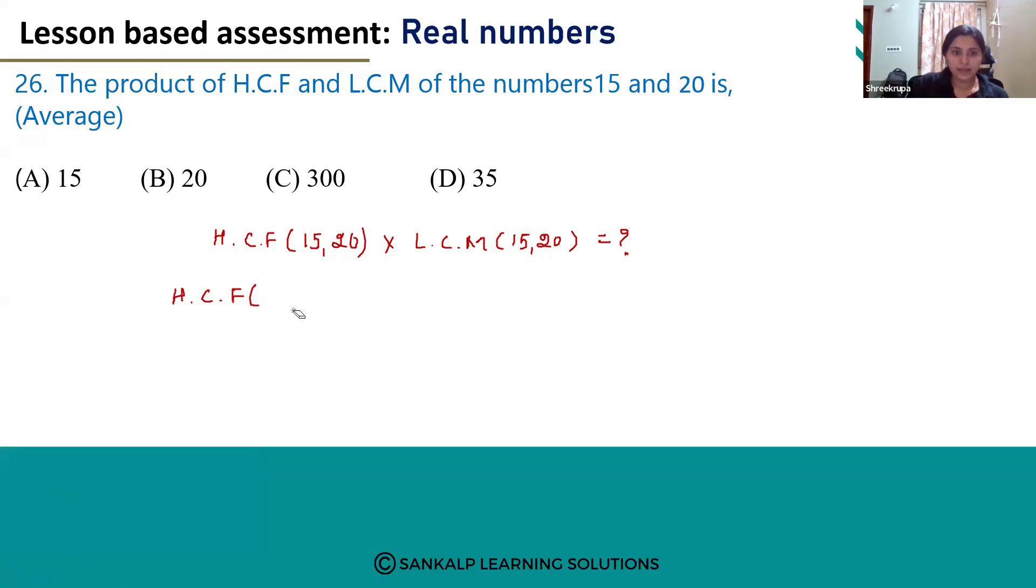HCF and LCM of two numbers is... Let's assume A and B are two numbers. So the product of HCF of A and B and LCM of A and B is the product of given numbers itself.